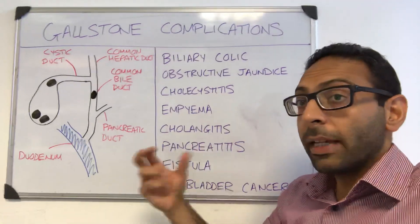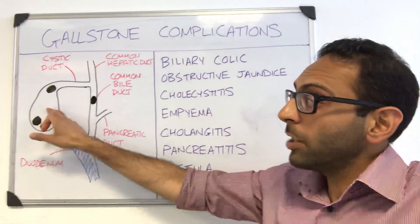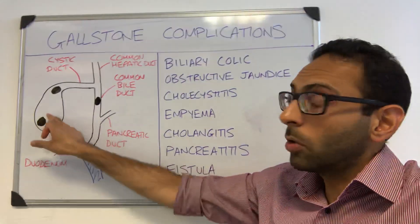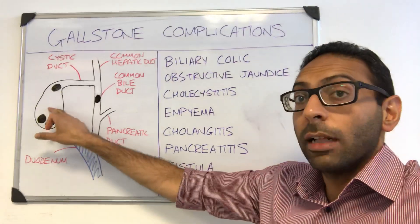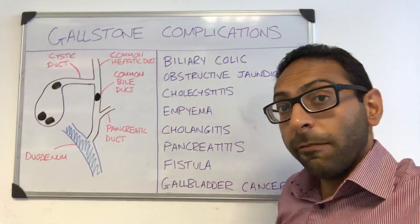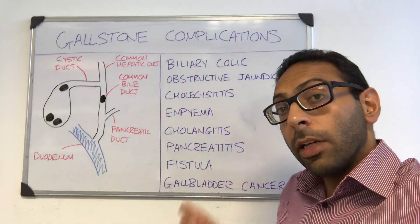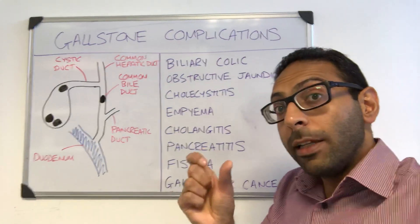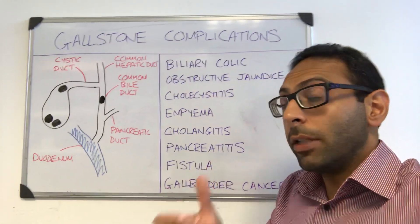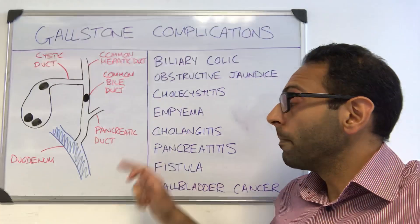Cholecystitis is a really common complication when you get infection or inflammation of the gallbladder itself. Classic features include fever, right upper quadrant pain, and the classic Murphy's sign that you elicit when you examine someone.